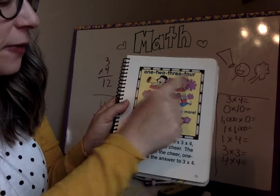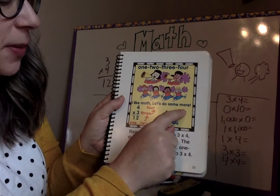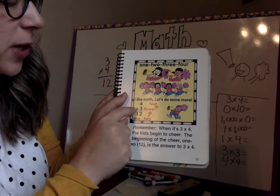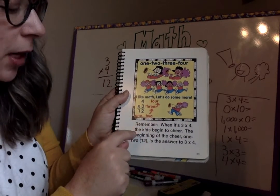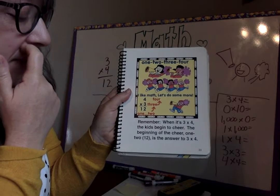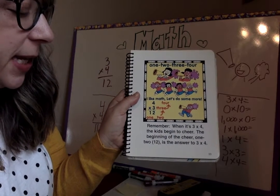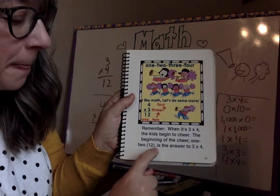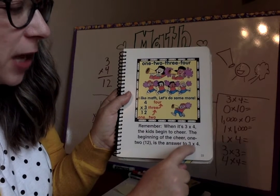One, two, three, four. I like math. Let's do some more. One, two, three, four. Four times three is twelve. Remember, when it's three times four, the kids begin to cheer. The beginning of the cheer is one, two. There's your answer, twelve, is the answer to three times four. One, two, three, four. I like math. Let's do some more.